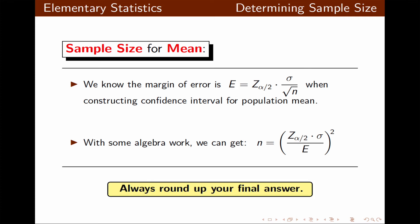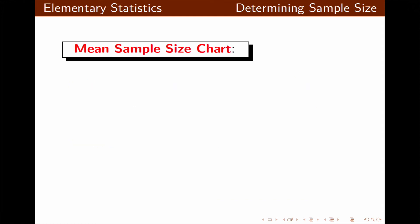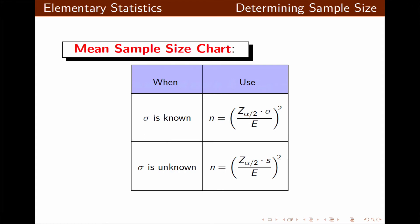When n is in decimal, we need to round up. When sigma is known, we use the formula just discussed. When sigma is unknown, the only difference is that instead of sigma, we use the sample standard deviation.